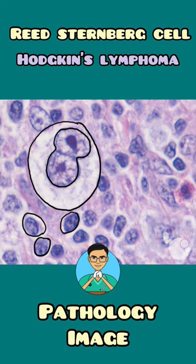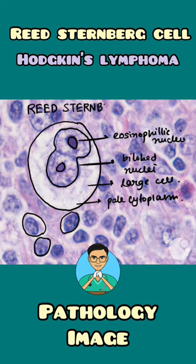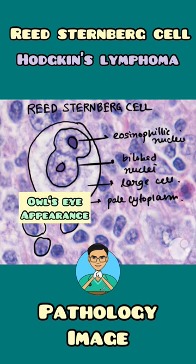And within the nucleus, we have eosinophilic nucleoli. And as we can see, they have pale cytoplasm. So this cell is known as a Reed-Sternberg cell, and it is seen in cases of Hodgkin's lymphoma.